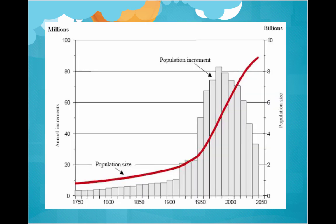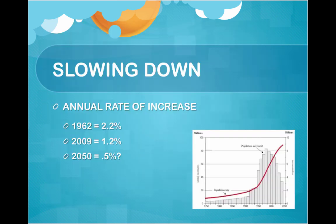However, it is slowing down. The annual rate of increase in 1962 was 2.2%. In 2009, it was 1.2%. And in 2050, it's expected to be 0.5%.